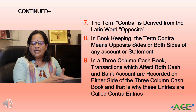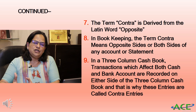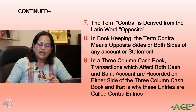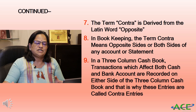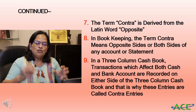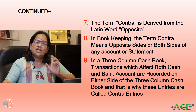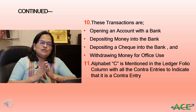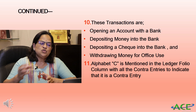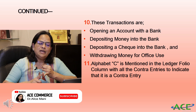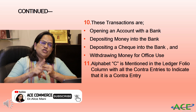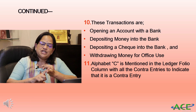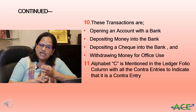In the three column cash book, transactions which affect both cash and bank accounts are recorded on either side of the statement — that is why these entries are called contra entries. There are four types of transactions that affect both cash balance and bank balance: opening a bank account, depositing money into bank, depositing a check into bank, and withdrawing money for office use.